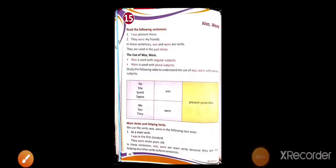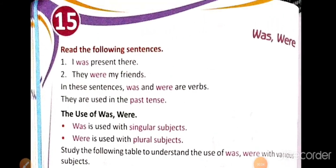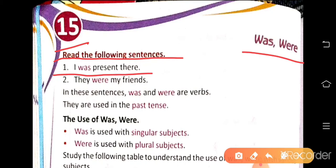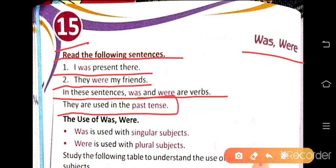This is page number 68, and here is lesson number 15. Read the following sentences: 'I was present there, they were my friends.' In these sentences, was and were are verbs.